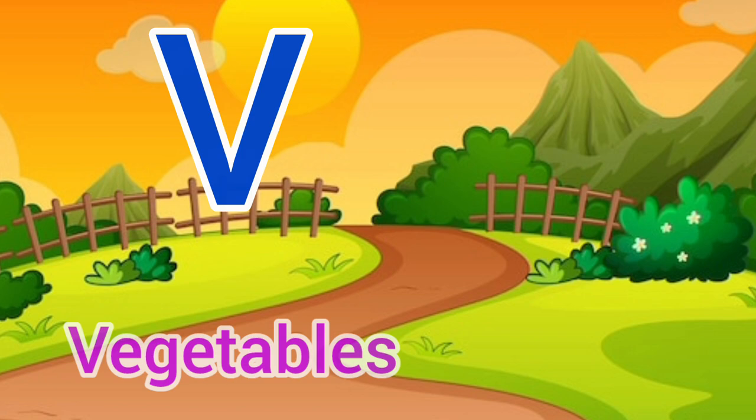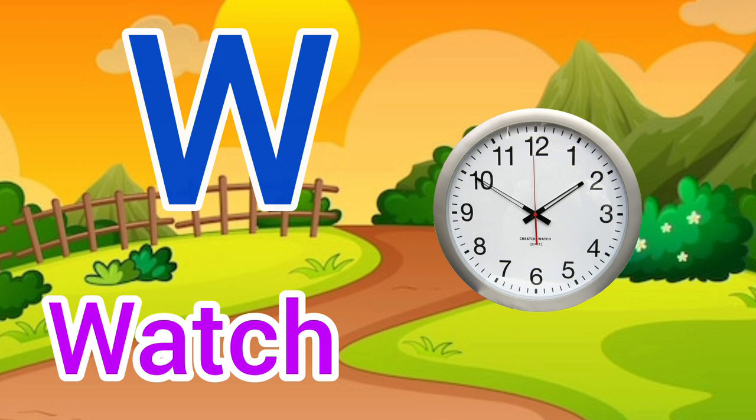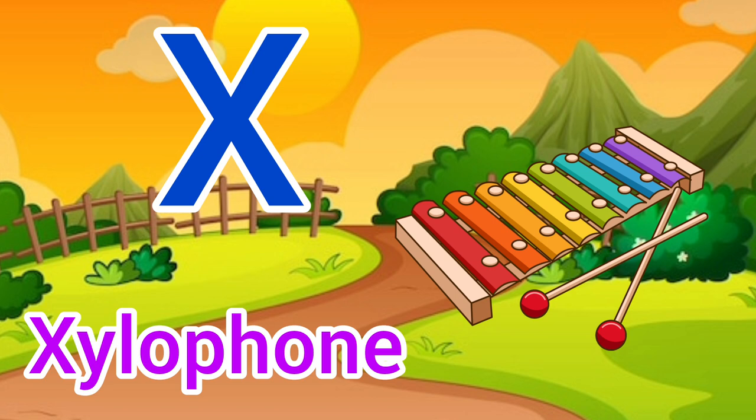V for vulture, vulture means gate. W for watch, watch means ghargos. X for xylophone, xylophone means xylophone.